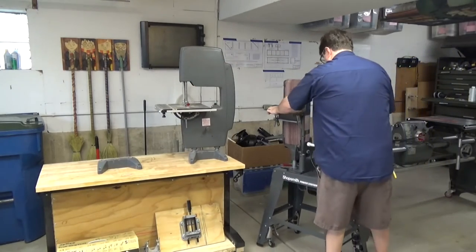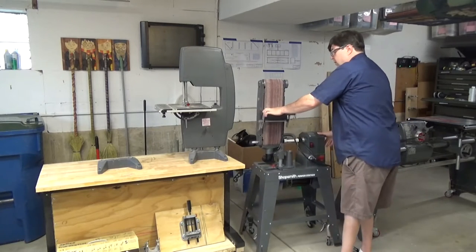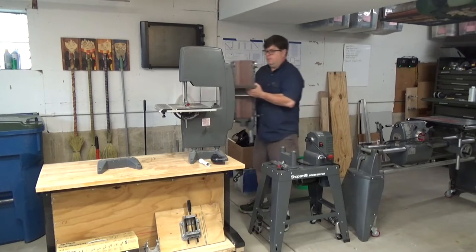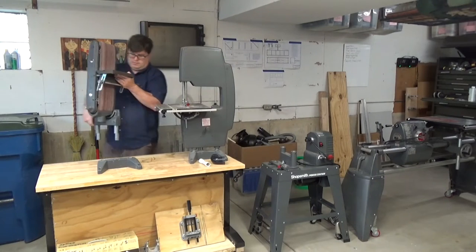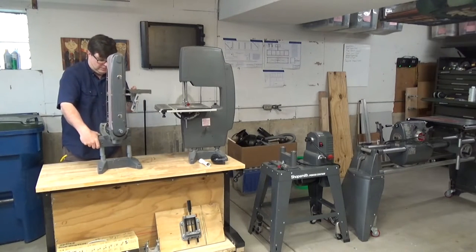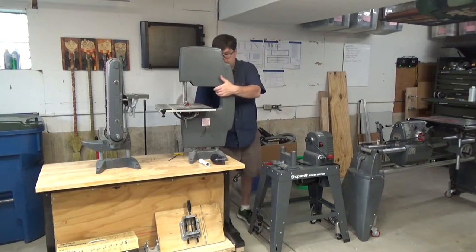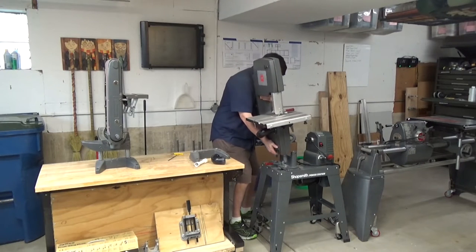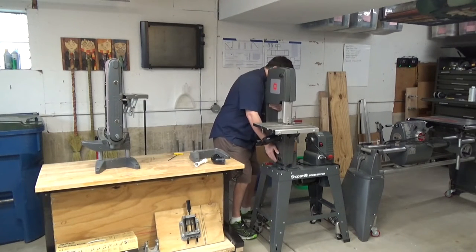Next I need to set up my bandsaw so I can rip this Poplar board into thin strips. Here's an example of one of those Shopsmith tool changeovers that you hear so much about. It's really no big deal. I just take off the belt sander and put on the bandsaw.